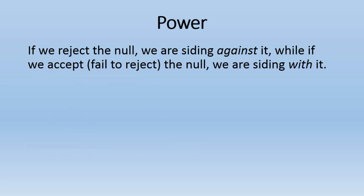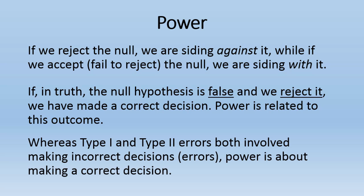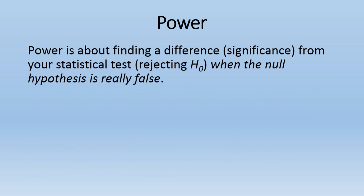If we reject the null, we are deciding against it, while if we accept the null, we are deciding with it. If in truth the null hypothesis is false and from our test we reject it, then we've made a correct decision. Power is related to this outcome — rejecting the null when it's false. Whereas type 1 and type 2 errors involve making incorrect decisions, power is about making a correct decision: finding a difference or getting significance from your statistical test when the null hypothesis is really false.